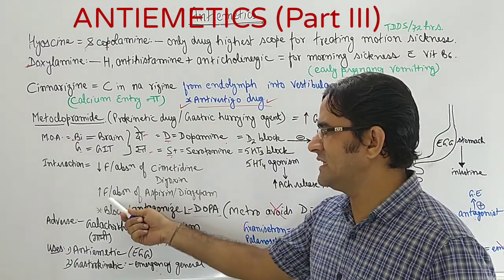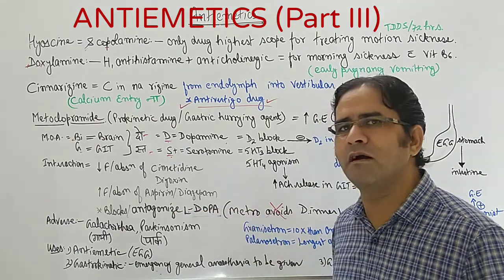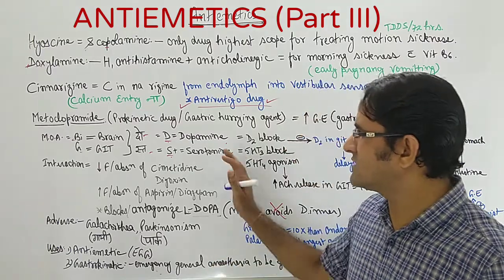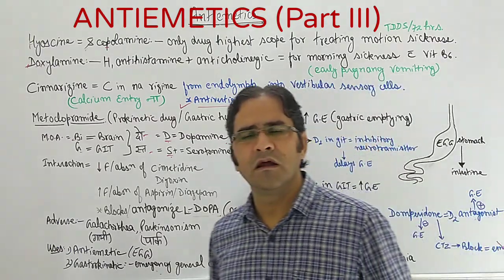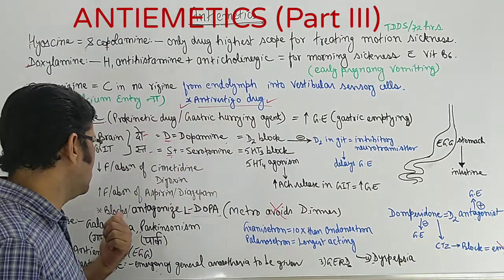Metoclopramide decreases the bioavailability or absorption of cimetidine and digoxin because they are mainly absorbed in the stomach. Similarly, there is increased absorption or bioavailability of aspirin and diazepam because they are mainly absorbed in the intestine.